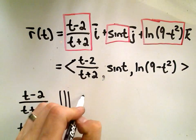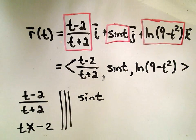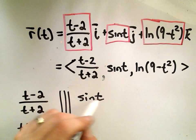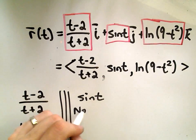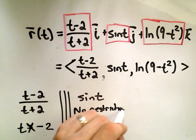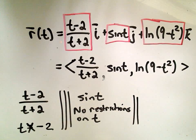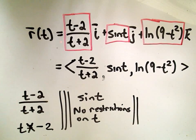The next thing I would have to think about is sin(t). But if you think about sin(t), sine is defined for any value. So to make sin(t) happy, there are no restrictions on t. So far, the only restriction we have is that t cannot equal negative 2.